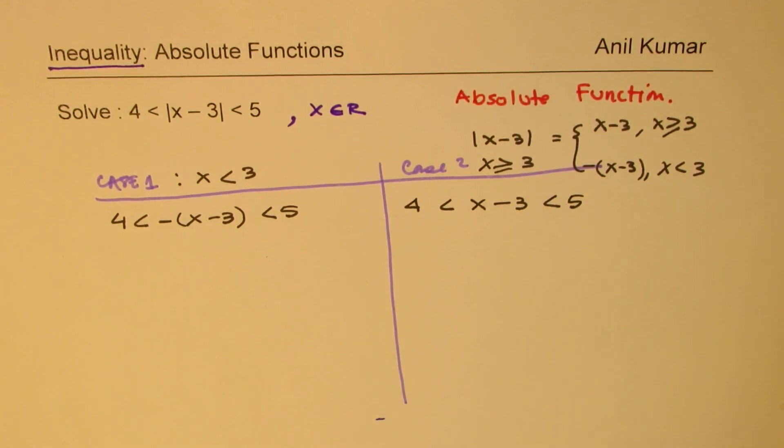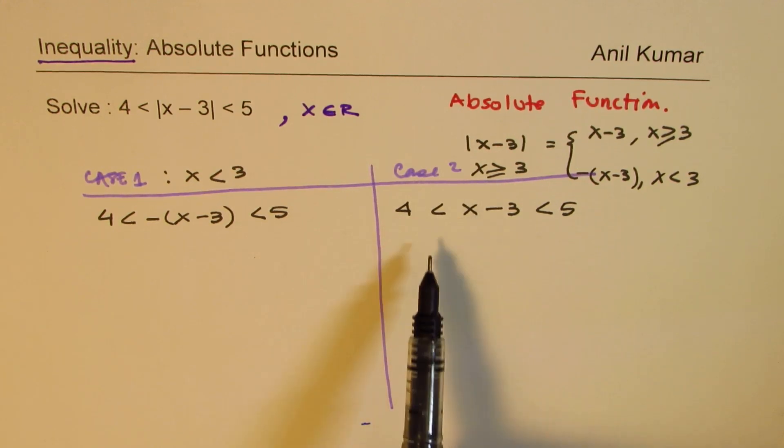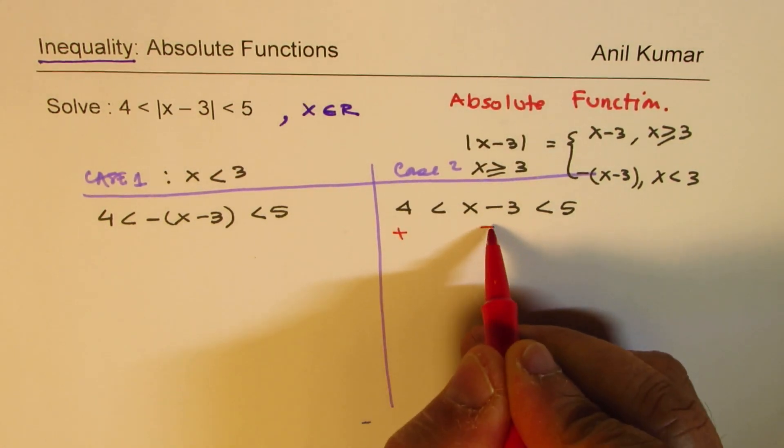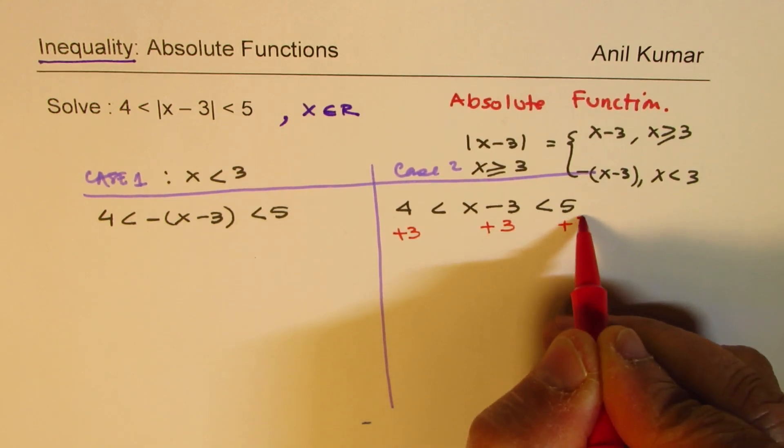Let's do the right side first, which is much simpler. We need to find what x could be. x minus 3 is greater than 4 and less than 5, so we should add 3 to all of them.